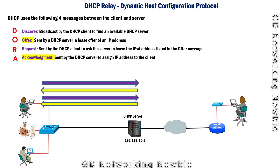This whole process assumes the DHCP server is available on the local subnet or local area network. The Discover message is sent as a broadcast, so the DHCP server must be on the same network to receive it. Since they are on the same network, it is possible for the broadcast message to be received by the DHCP server.